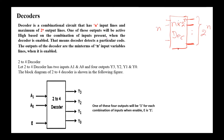A decoder usually has one additional enable input. When the enable is zero, all the outputs are zeros. If it is one, only one of these outputs is equal to one, depending on the state of the input.